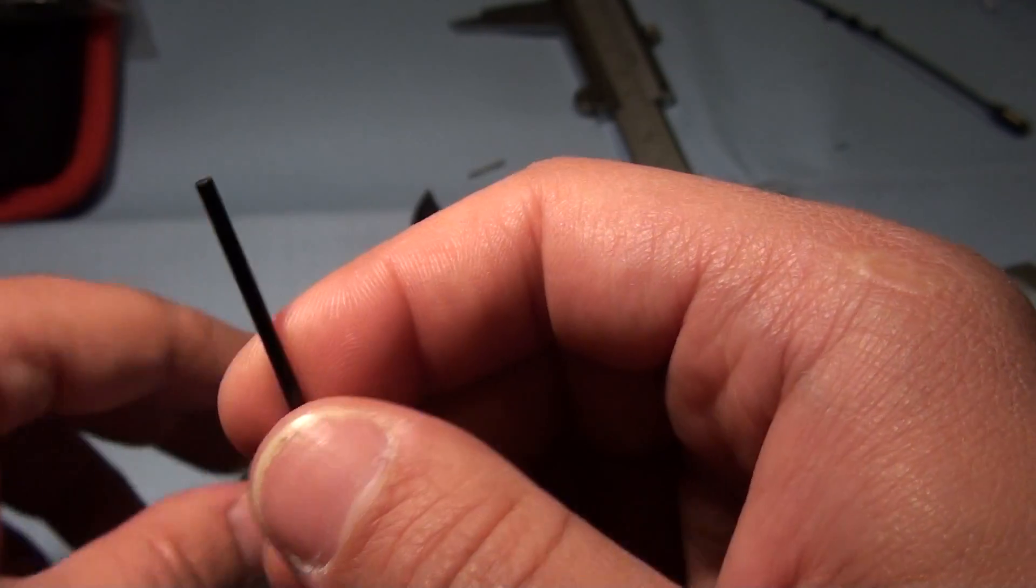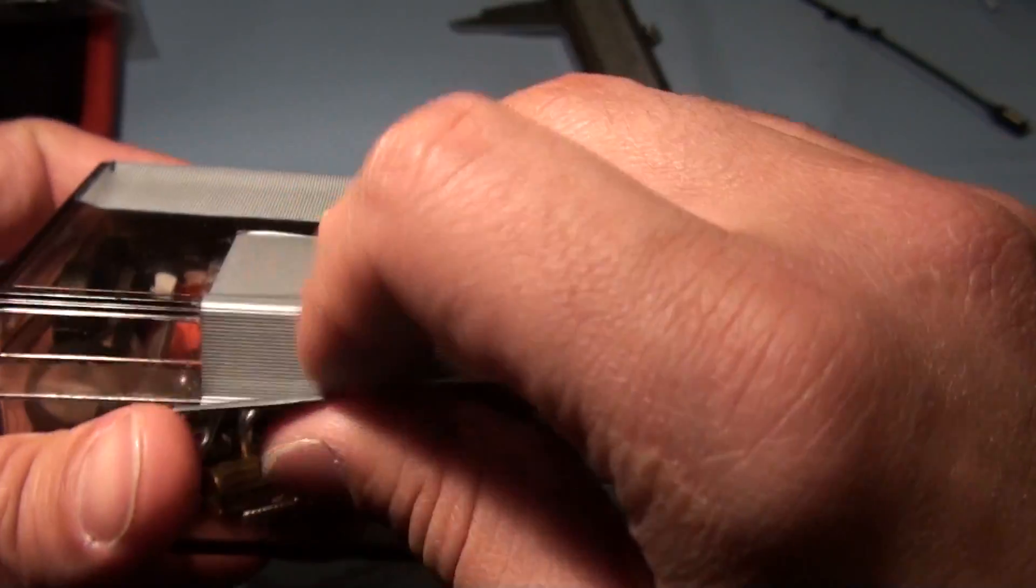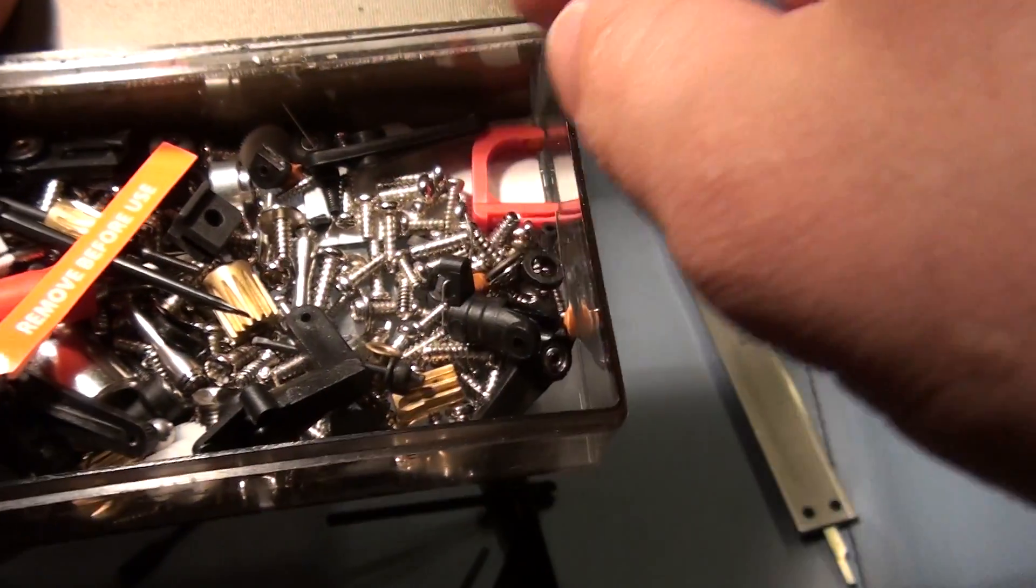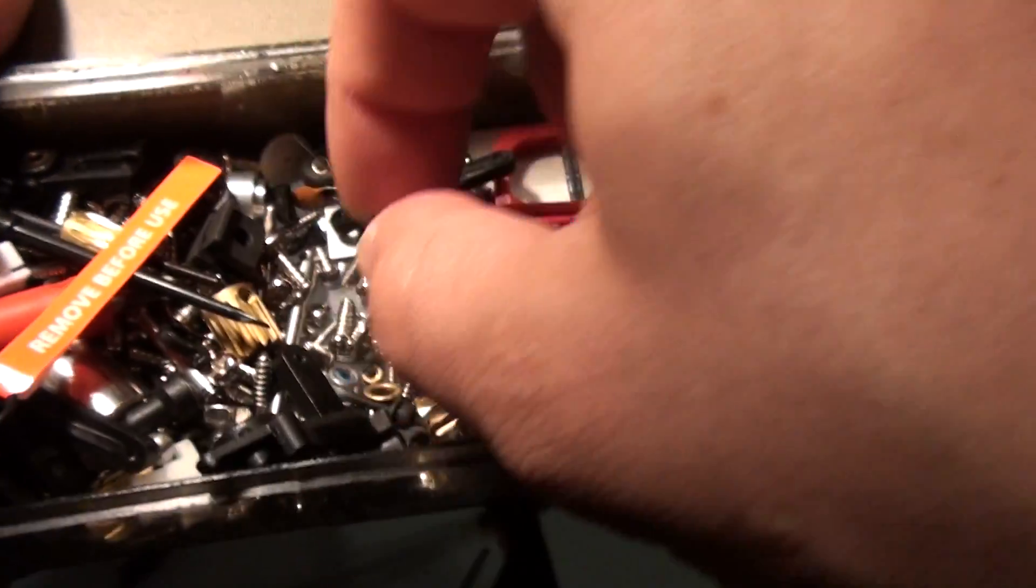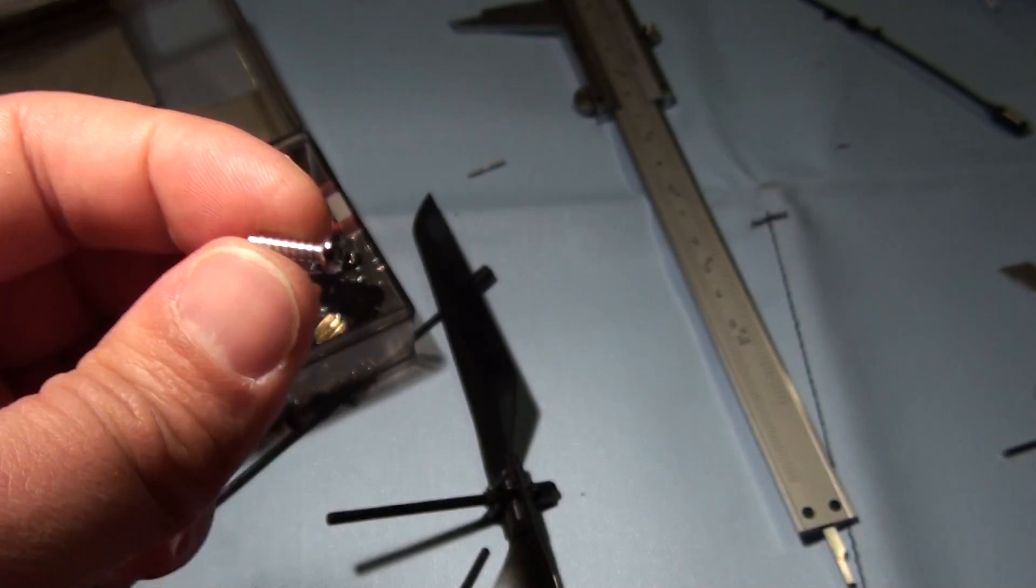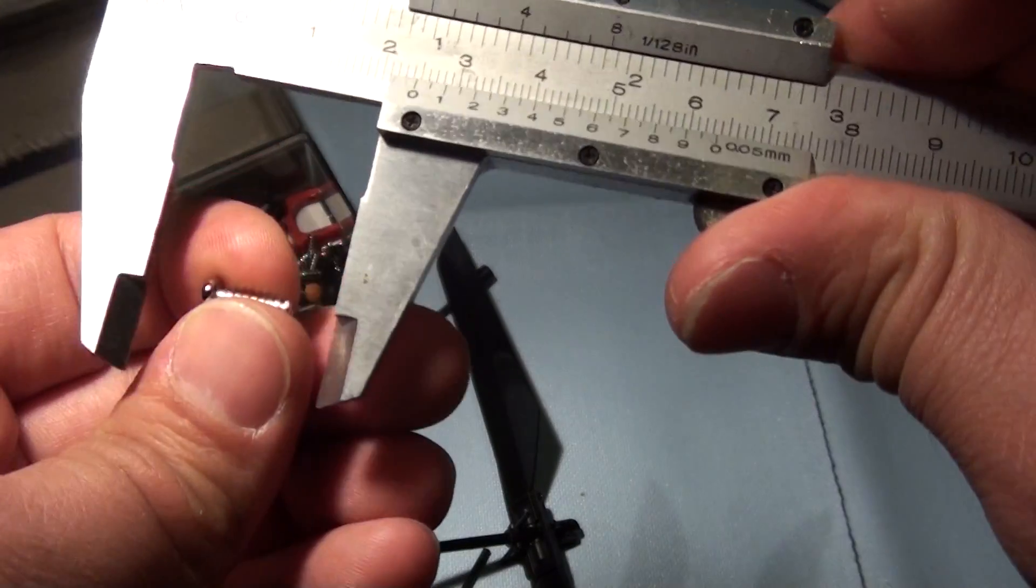Before I used a carbon rod I used one of my screws out of my box that was also exactly two millimeters. It was a long one. I'm going to show you, this is an example, this is not the one I used. It was a long one also 1.39 centimeters.